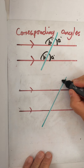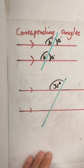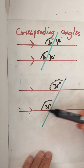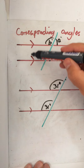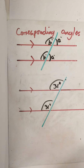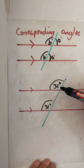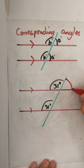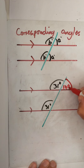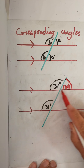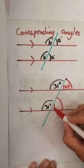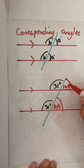So if this angle was 31 degrees, we know that this corresponding angle here is also 31 degrees. Note they're on parallel lines — these arrows are showing those parallel lines. This doesn't work if the lines are not parallel. So on parallel lines, that'll be 31 degrees. Now, we know this angle here would therefore be 149 degrees, because angles on a straight line add up to 180 degrees. So these are corresponding angles.